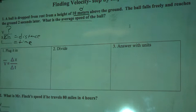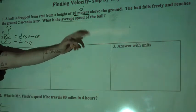And then the ball falls freely and reaches the ground 2 seconds later. So my time then is 2 seconds. The total time it took to do this is 2 seconds. I'm still trying to find what is the average speed of the ball.